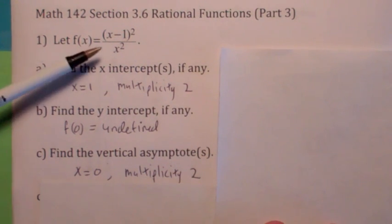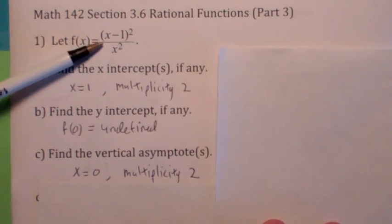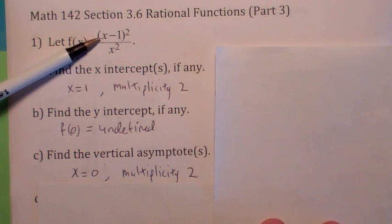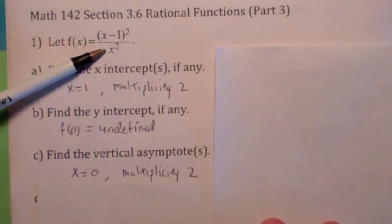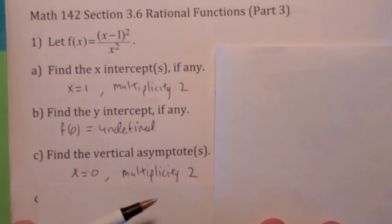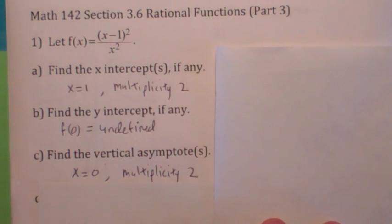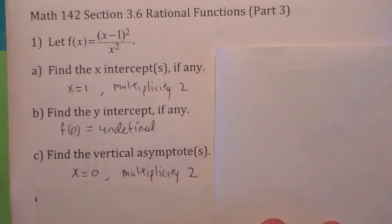In terms of the vertical asymptote, that's going to be where the bottom is zero, as long as the top isn't zero also. So you're going to have a vertical asymptote at zero, and it's going to have multiplicity 2. Remember what that means? On a vertical asymptote, it means both sides are either going to go to positive infinity or negative infinity.